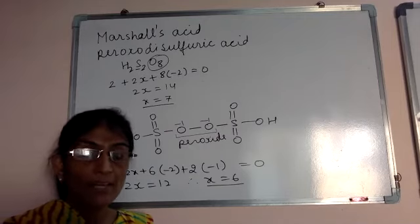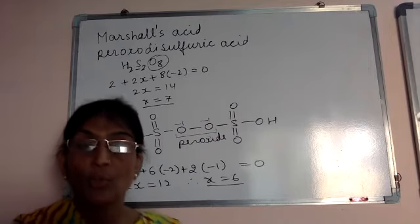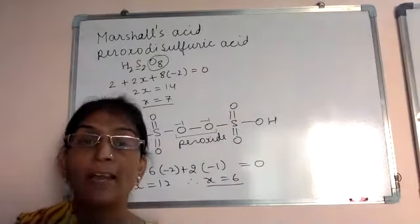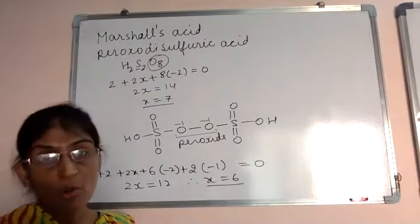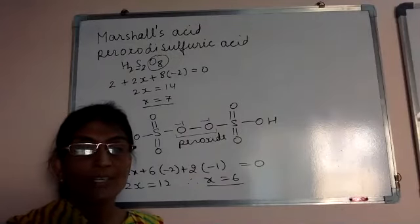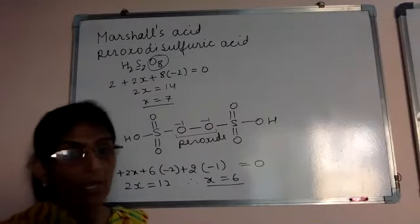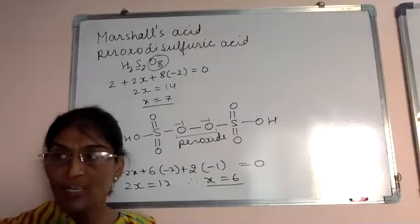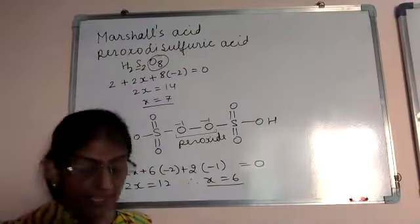We must keep in mind whether there is a peroxide bond or a normal oxide. If it is a normal oxide, oxygen's oxidation state is minus 2. If it is a peroxide bond, oxygen's oxidation state is minus 1.